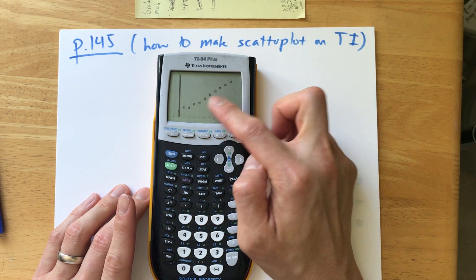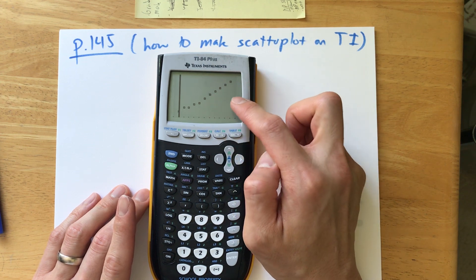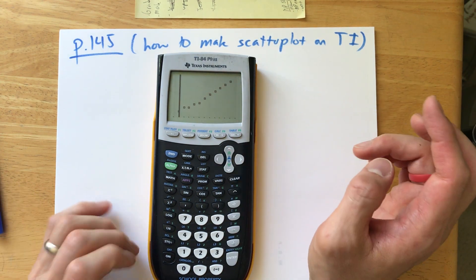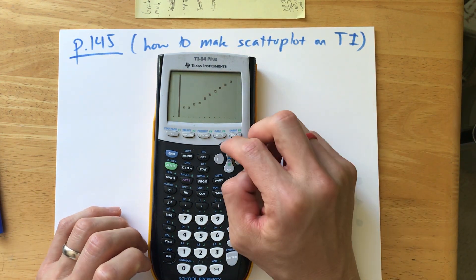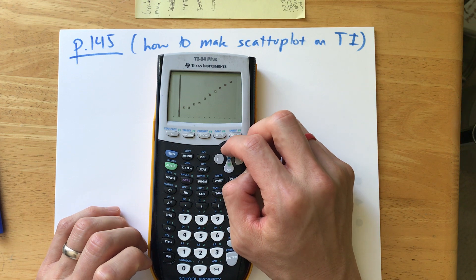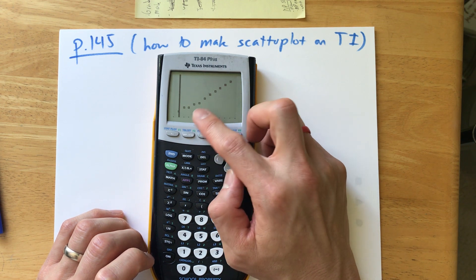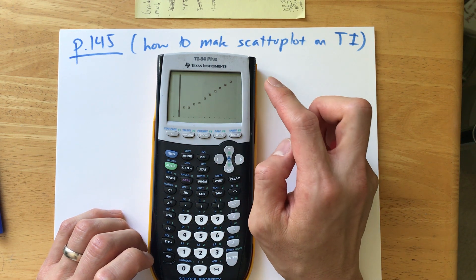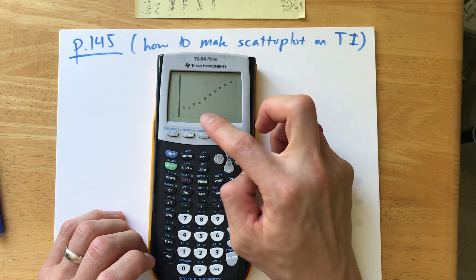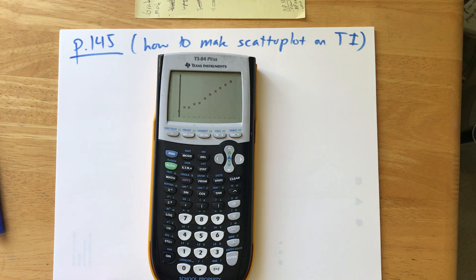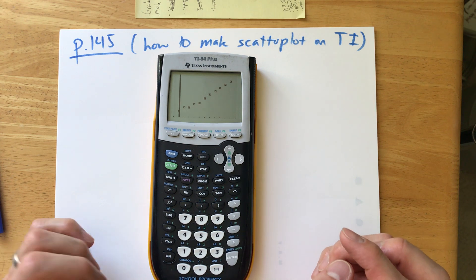How would you describe that with FUDs? It's definitely positive and linear. I don't see any outliers or unusual features. It's linear, positive, and the strength I would say is pretty strong. Congratulations — you made your first scatter plot. Now let's actually calculate R.